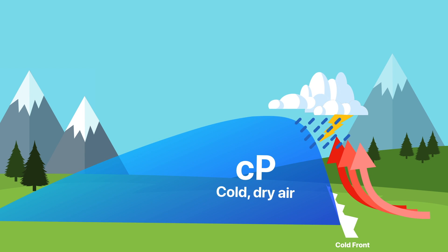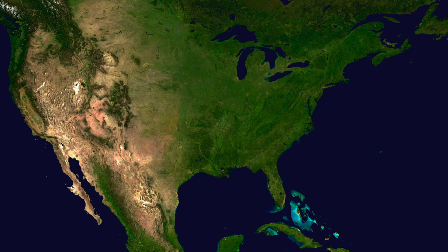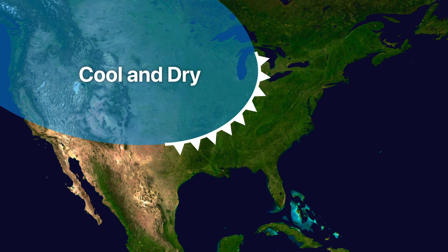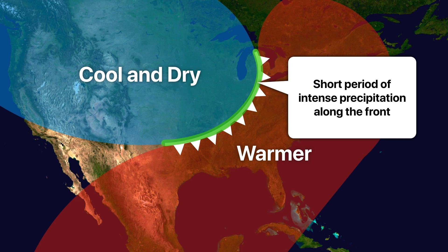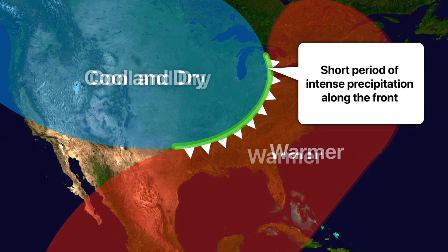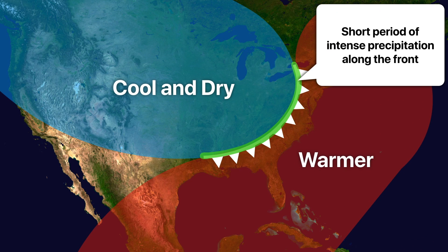If you're standing on the surface, you'll experience a short period of fairly intense precipitation that occurs when the front passes by. Let's review by looking at our map again. With a cold front, we can predict exactly what the characteristics will be: cool, dry air behind the front, warmer air out ahead of it, and right along that boundary is our short period of intense precipitation. That's going to follow the front wherever it goes. And that's how a cold front works. Thanks for listening.